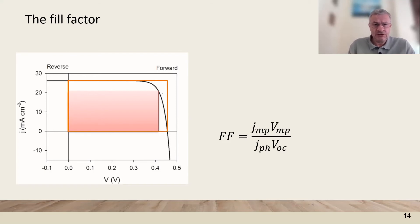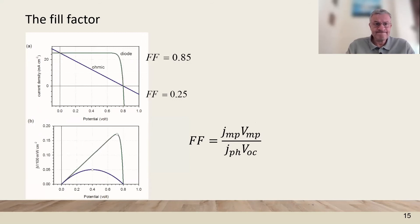This is the division of these two areas and it's related to the shape of the JV curve. If we have a good diode equation then the fill factor is going to be 0.85.